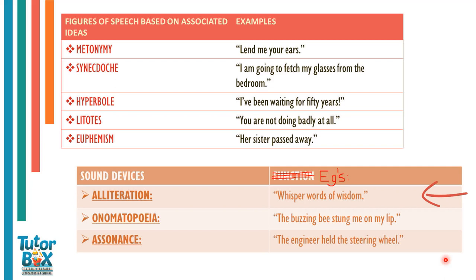The example given for alliteration is 'whisper words of wisdom' — the alliteration is the W sound in 'whisper,' 'words,' and 'wisdom.' For onomatopoeia, the example is 'the buzzing bee stung me on my lip' — the onomatopoeia is the word 'buzzing.' For assonance, the example is 'the engineer held the steering wheel' — the assonance is the double-E vowel sound in 'engineer,' 'steering,' and 'wheel.'